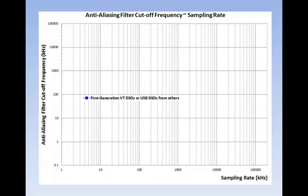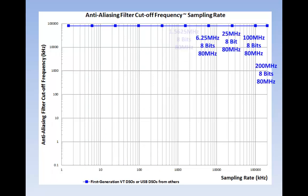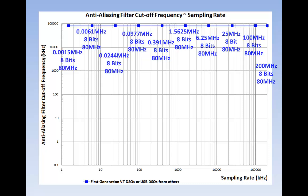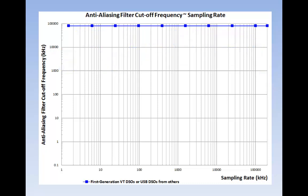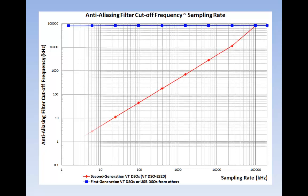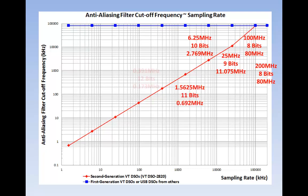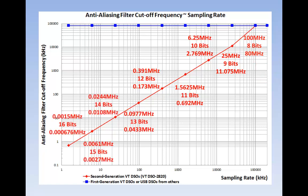Unique Feature 6: Anti-aliasing filter for spectrum analyzer. According to Nyquist-Shannon sampling theorem, the second-generation VT DSOs solve this problem using anti-aliasing filters that can adapt to the sampling rate. As the sampling rate goes down, the cut-off frequency of the anti-aliasing filter goes down as well to ensure reliable measurements.